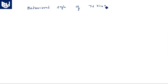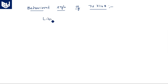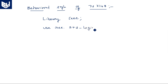By seeing the IC number 74148, you should understand it is a priority encoder. It is very, very important to remember the IC numbers. So for the behavioral model, whatever may be the model, you have to start with the library declaration.